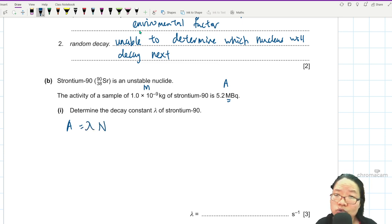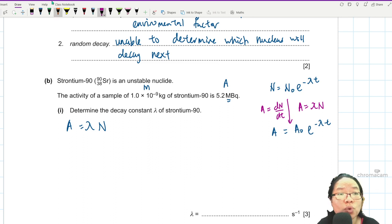So your decay equations that you need to know is N equals N naught e negative lambda t, and A equals A naught e negative lambda t, because A is equal to dN over dt. You can watch the video where I derive this. And also A is equal to lambda N. Equations that you need to know. And if you want to find lambda, lambda is ln 2 over half life. Need to know the proof.